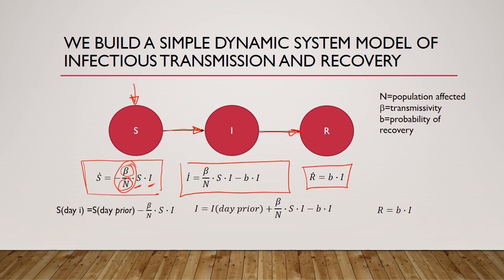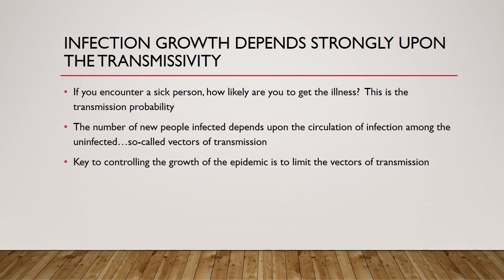What we then do is ask: how many infected people are there today? We take the number of infected people from the day before, add to that the number of people from the susceptible population who have now been infected, and remove from that the number of people who have recovered. It's actually a very simple set of equations and something that's very easy for a computer to do.